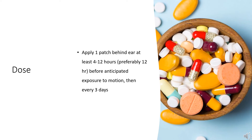For motion sickness prophylaxis, apply one transdermal patch behind the ear at least 4–12 hours, preferably 12 hours, before anticipated exposure to motion, then every 3 days as needed (PRN).